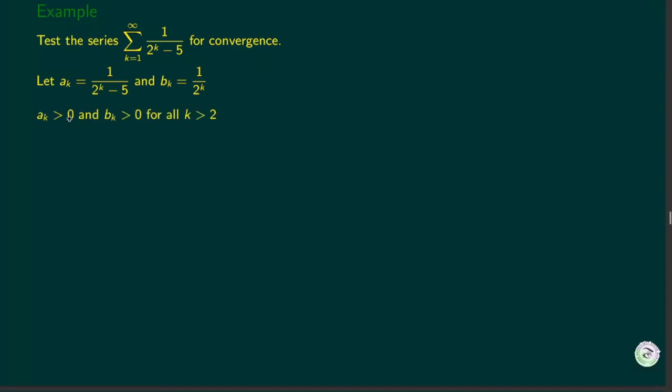Now ak and bk are both positive for k bigger than 2, because for 1 and 2 this one is negative, but if you consider the k values bigger than 2, then this is positive.